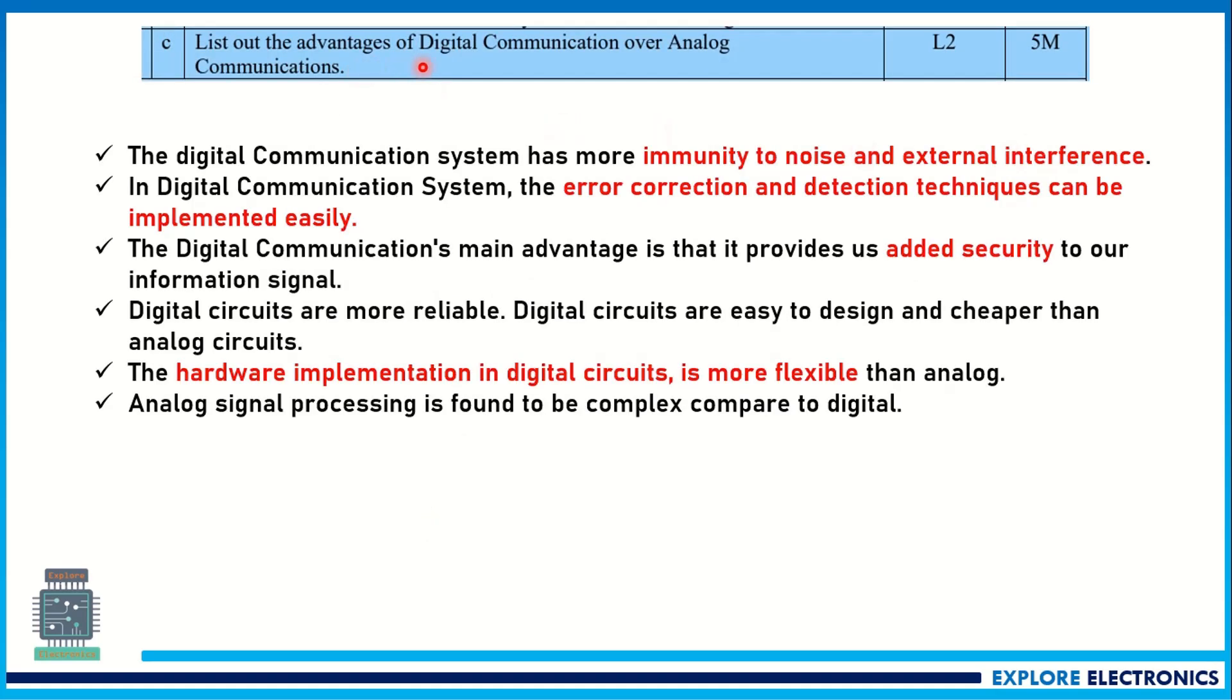Then question C: list out the advantages of digital communication over analog communication. Here we need to list the advantages of digital communication and we need to list the disadvantages of analog communication. If you see digital communication, noise is very less. Immunity to noise is more, and external interferences are also less in digital communication.